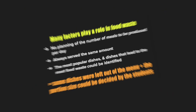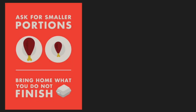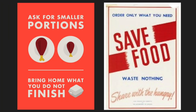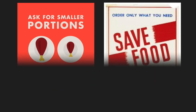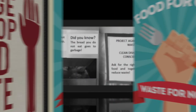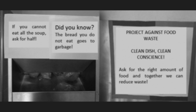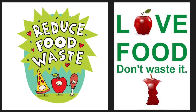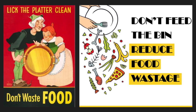After stage one, some dishes were left out of the menu, prepared in smaller quantities, and portion size could be decided by the students. Staff started encouraging students to choose smaller portions, supported by motivating posters. Consumers tend to lose their sense of responsibility for food wasted when eating out because they feel it is out of their control, and this needed to be changed. The posters stated: 'If you cannot eat all the soup, ask for half' and 'Ask for the right amount of food — together we can reduce waste.' These posters engaged consumers in food waste reduction and conveyed that they are responsible for their actions.